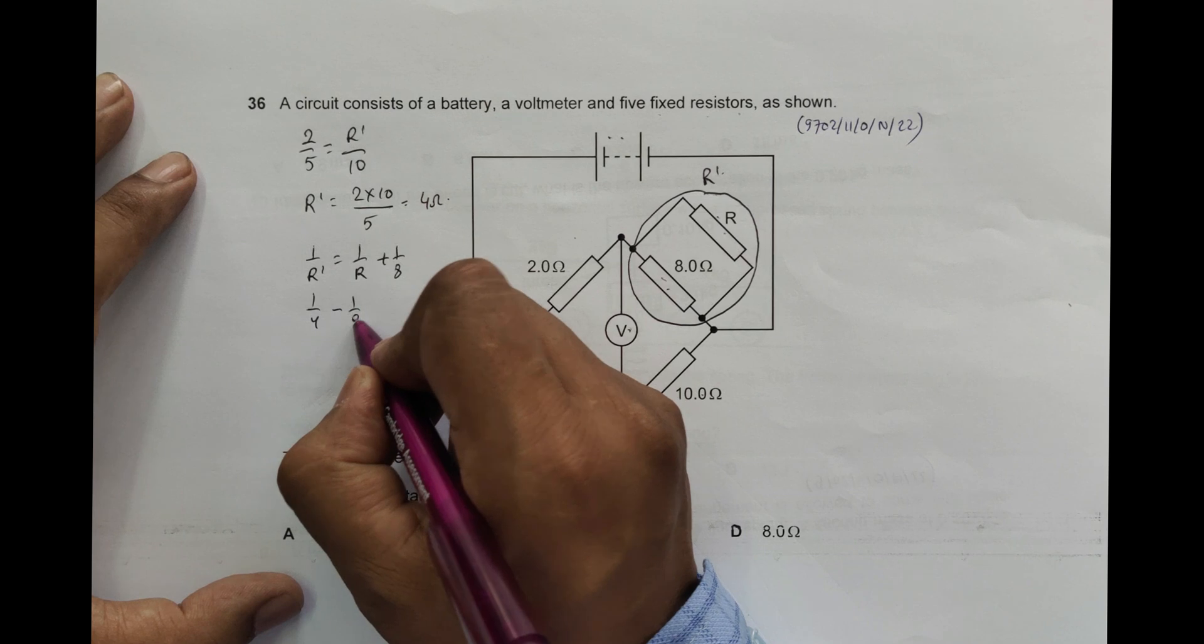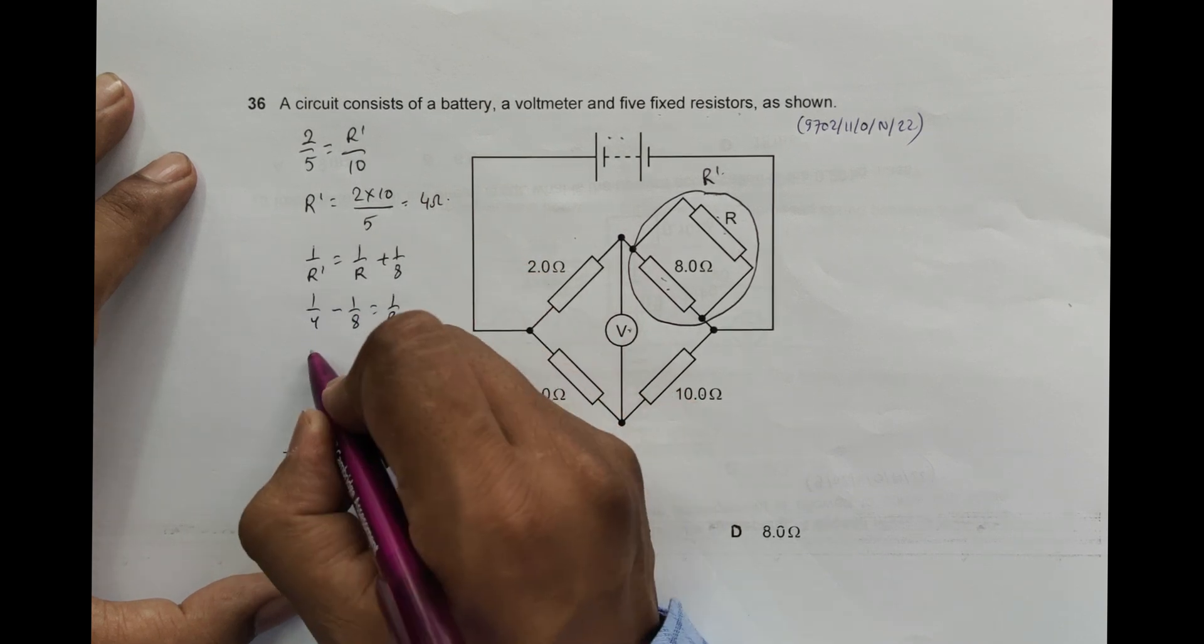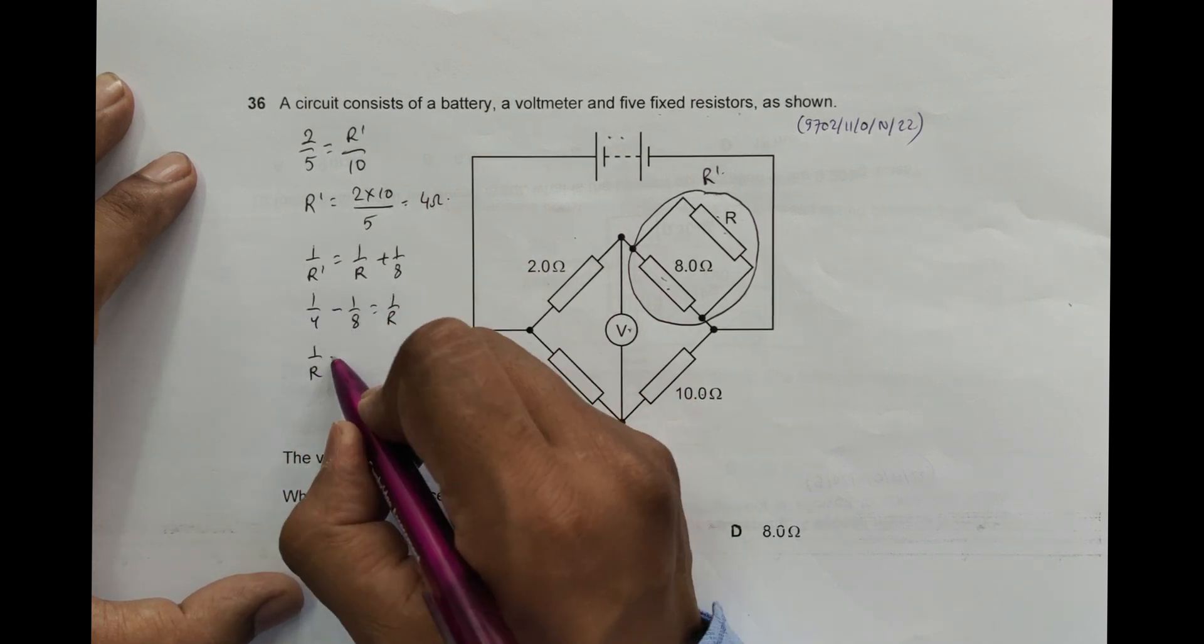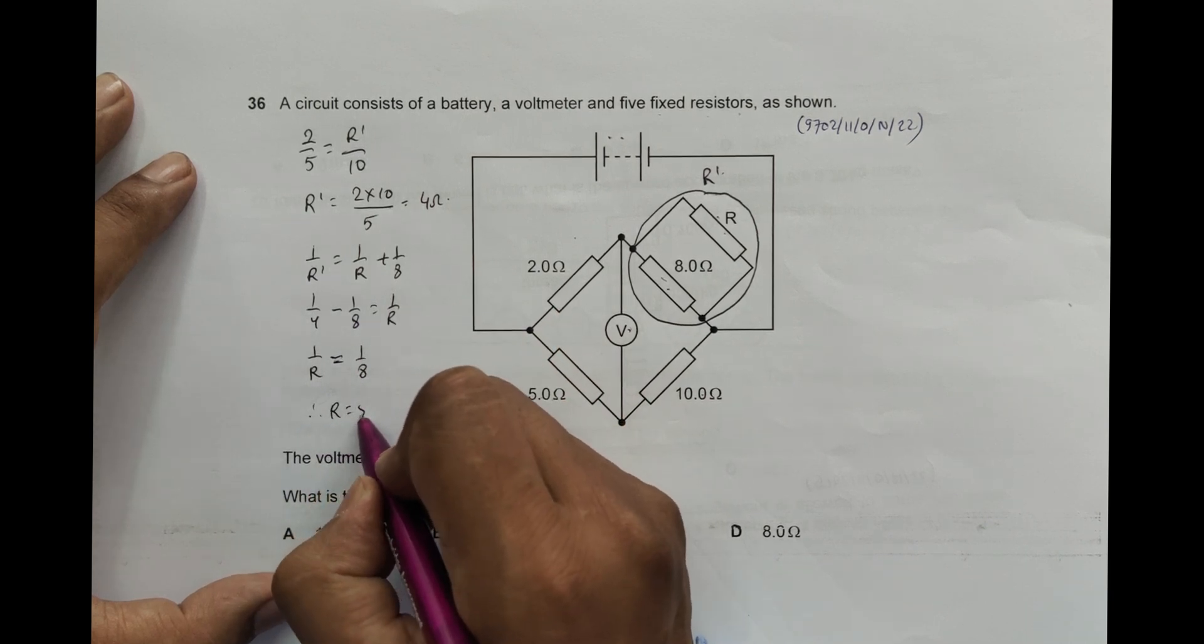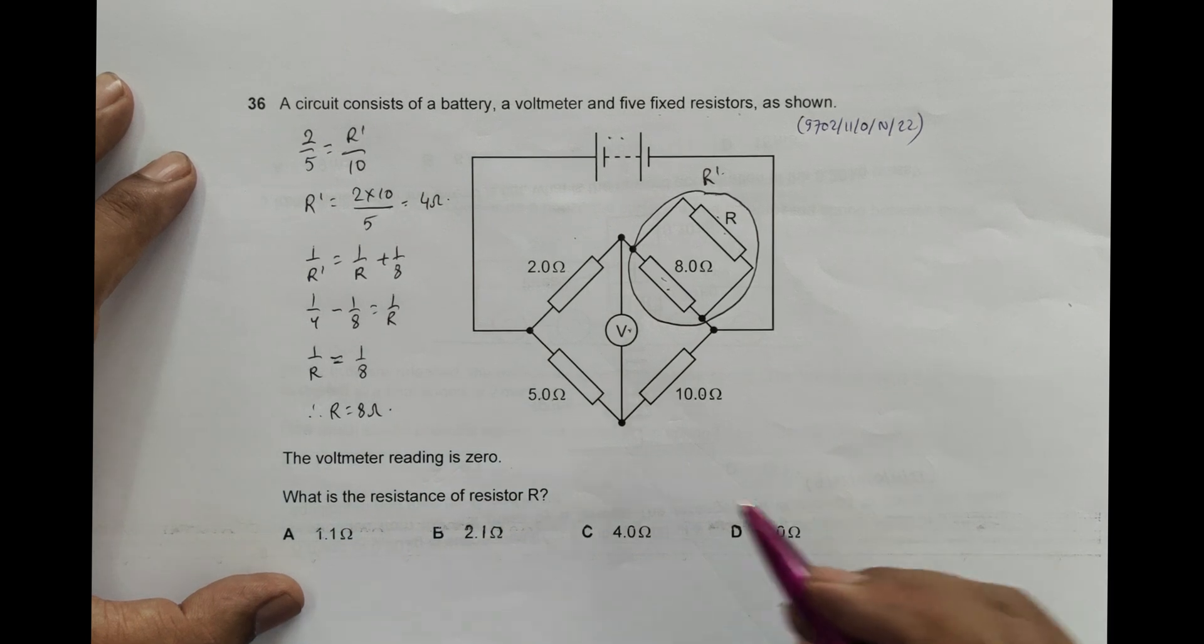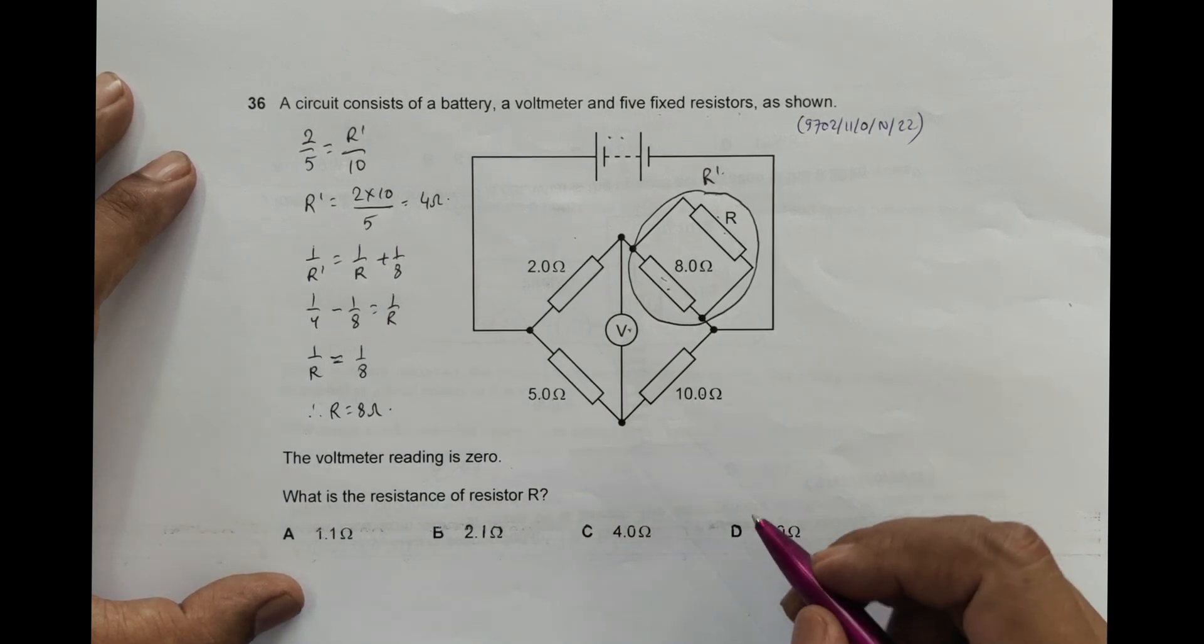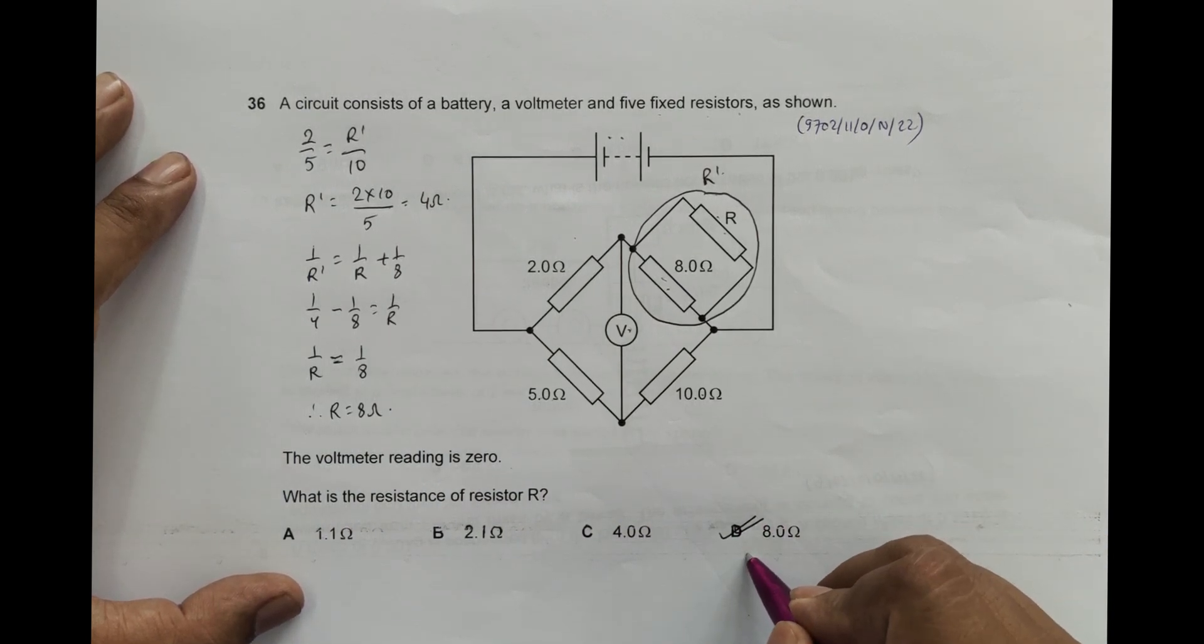This minus goes here: 1 by 8 equal to 1 by R. So 1 by R should be equal to 1 by 4 minus 1 by 8, which should be equal to 1 by 8. Therefore this R becomes 8 ohm. So R is 8 ohm and the choice that we have is choice number D. This is the correct choice.